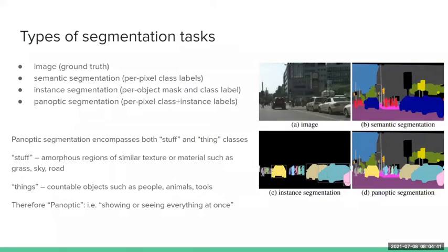I will explain what panoptic segmentation is. Here are the different types of segmentation tasks. On image A there, you've got the ground truth image. Image B, you've got semantic segmentation, so that's per pixel class labels for semantically similar objects. For example, the cars being the same object, essentially the same class.